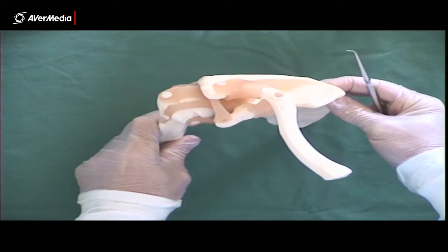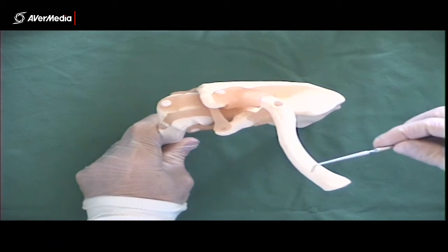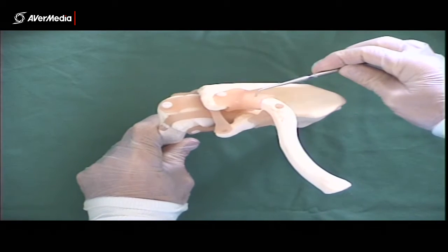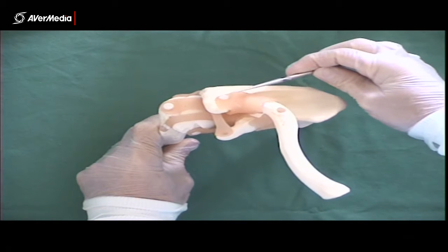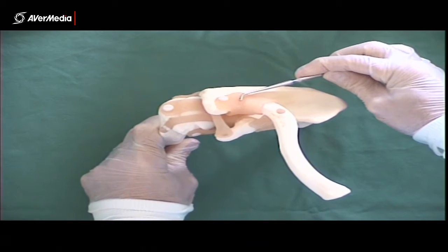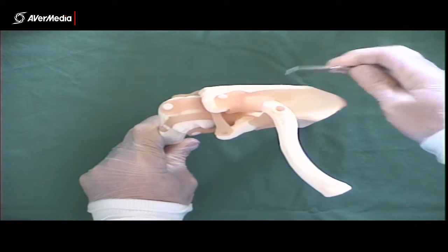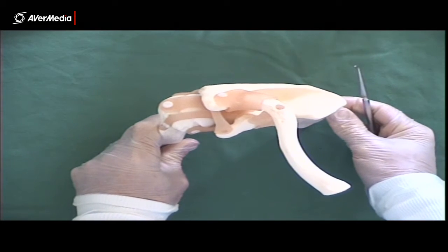If we take a superior point of view, here we have the clavicle and here's the acromion. So these fibers here on the superior aspect of the acromioclavicular joint are the acromioclavicular ligament.